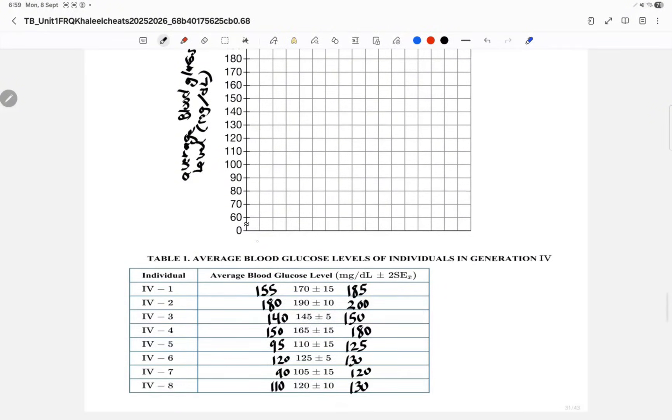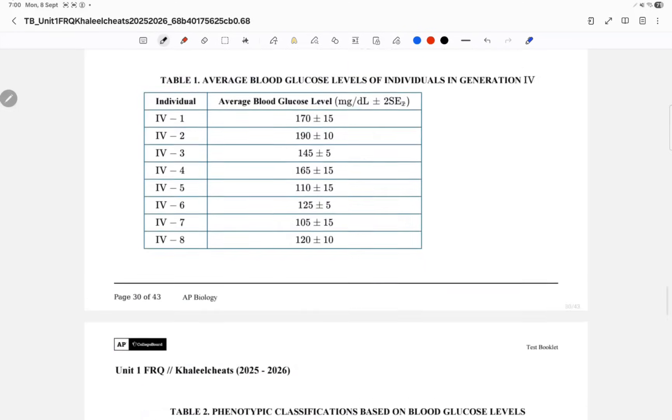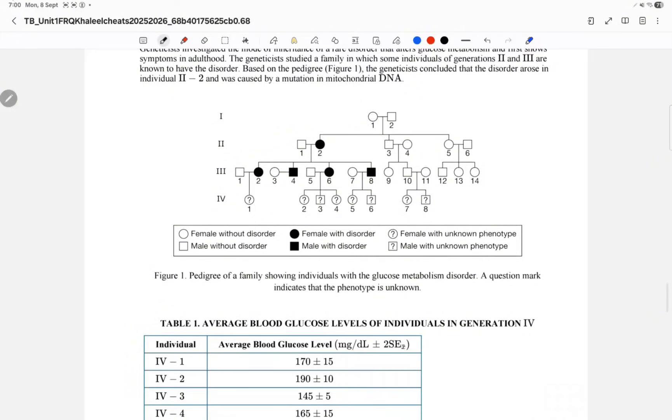Now let's look at the x-axis. We will have eight individuals, so I'm gonna say IV1, IV2, IV3, IV4... Actually, IV means four, so individual in the fourth generation. Yeah, fourth generation, right.